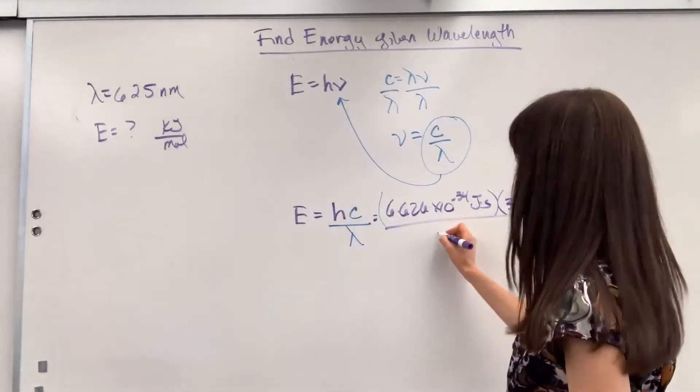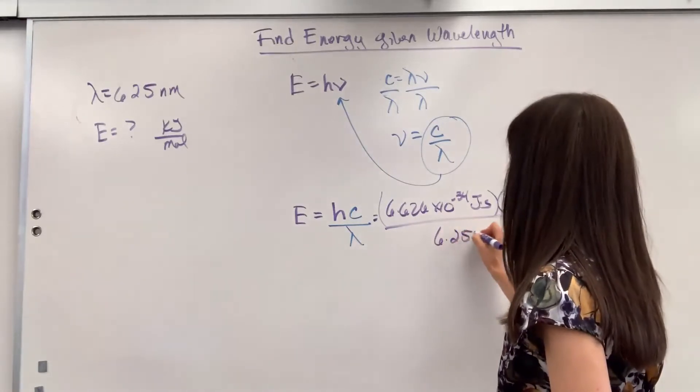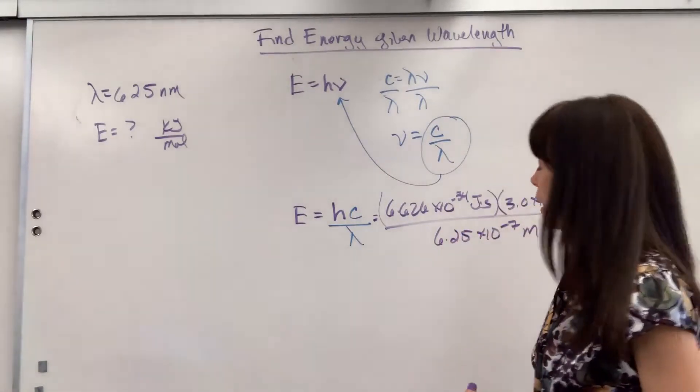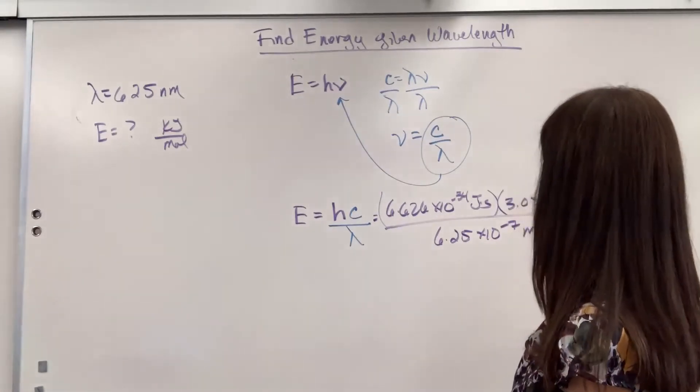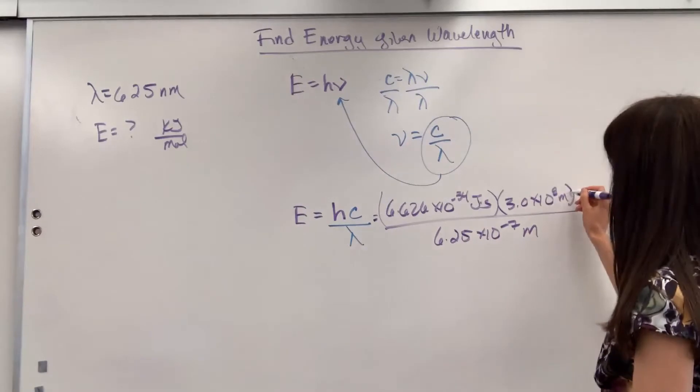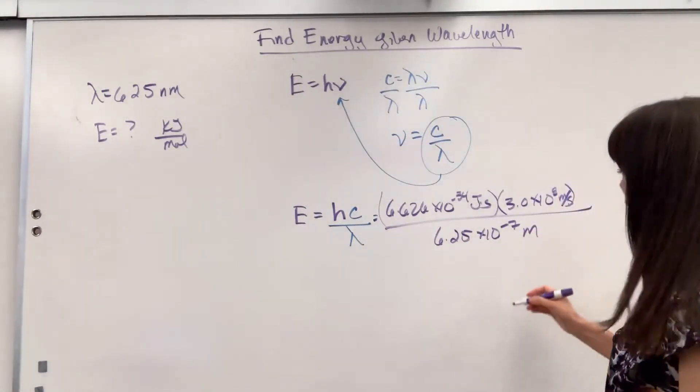The wavelength in meters, remember, was 6.25 times 10 to the negative 7 meters. Let's look at our units together. Oh, I'm so sorry, that's meters per second right there. Let's look at our units together.